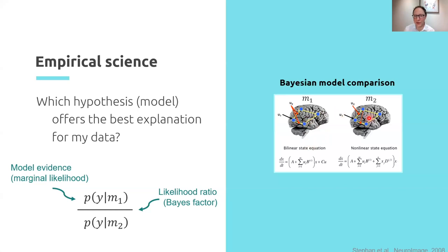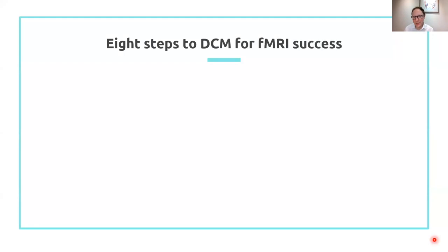Let's say I have two different models of connectivity within the software — there's a different equation for each one. Practically, you don't specify the equations; you just tick boxes in the software, and it will compute the evidence for each model and then give you a Bayes factor as a result. That's the overarching end goal of where we want to get with our analyses. So I'm going to suggest that to get to that step, there are eight steps in total for DCM for fMRI, and I just want to walk through them.